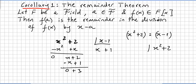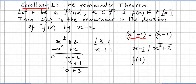So you want to divide x squared plus 2 by x minus 1. What the theorem says is f(a) — here a is 1 — so we compute f(1): substituting 1 gives 1 plus 2, which is 3. You can check that if you divide x squared plus 2 by x minus 1, you get quotient x plus 1 and remainder 3. This is the remainder theorem.